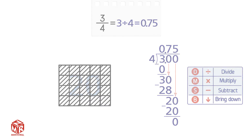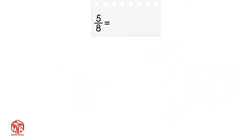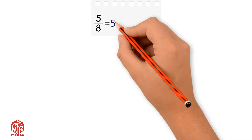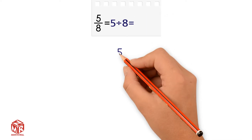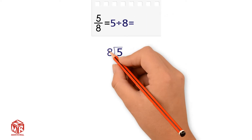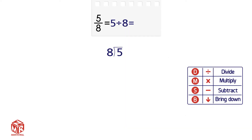Let's do another example: 5 over 8. 5 eighths is the same as saying 5 divided by 8. Let's use long division to solve. The first step is to divide 5 by 8.